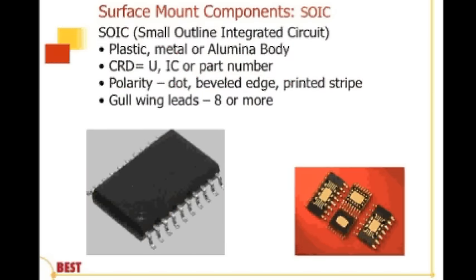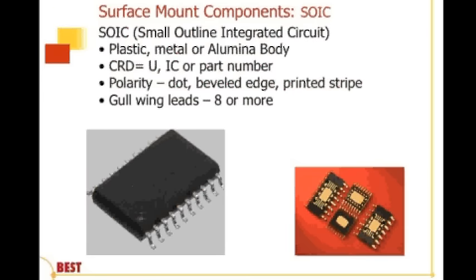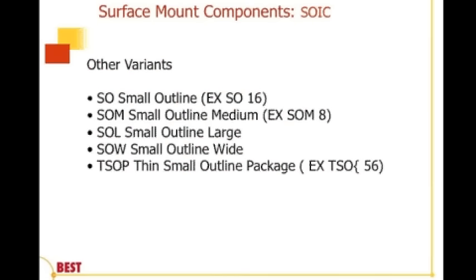Then we have SOICs in a variety of different styles. When we talk about SOICs we identify them with the package style followed by the number of leads — so on the bottom left we have 10 leads per side or 20 total leads, making it an SOIC 20. Notice the dimple on the component body, which orients you to placing it in the right location based on what you see on the silkscreen. Some other variants include SOs, SOMs, SOLs, OWs, and a very common style — the TSOP or Thin Small Outline Package. A TSOP 56 would be a 56-leaded Thin Small Outline Package.